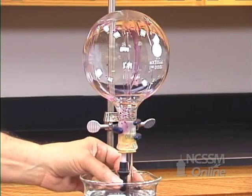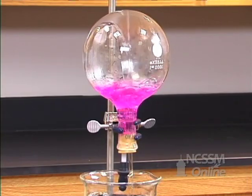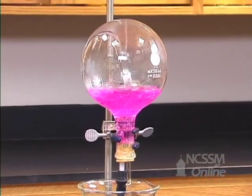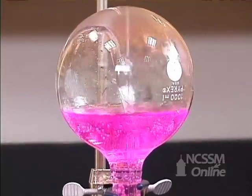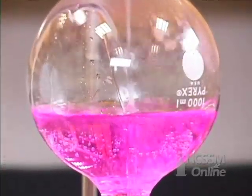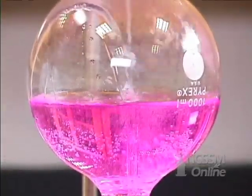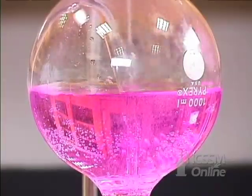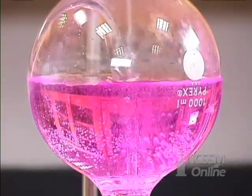The ammonia gas is very soluble in water and very rapidly dissolves, creating a low pressure situation inside the flask. Atmospheric pressure will force the water up into the flask. We get a fountain.